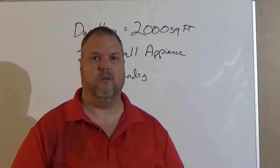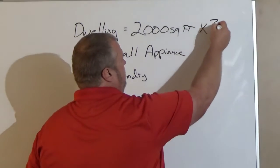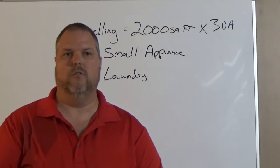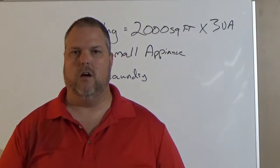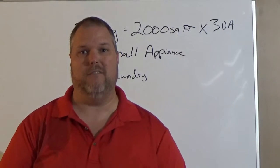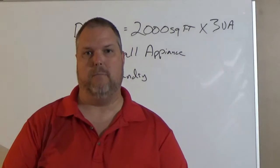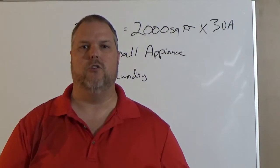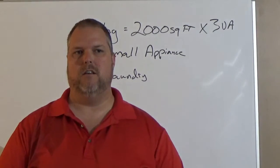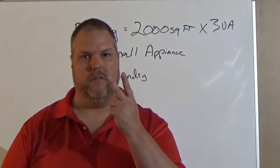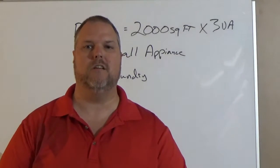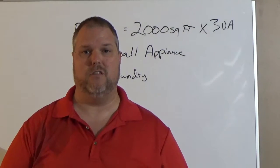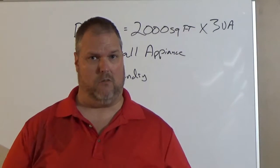We're going to take the 2,000 square feet and multiply it by 3 VA. Appliance circuits now, when we go into Article 220.52(A), that tells us we have to take 1,500 VA per branch circuit. According to 210.11(C)(1), you need to have a minimum of 2 branch circuits, right? So I'm going to take those 2 branch circuits, I'm going to take them 1,500 a piece. That's 3,000.